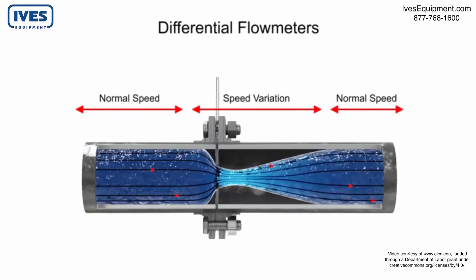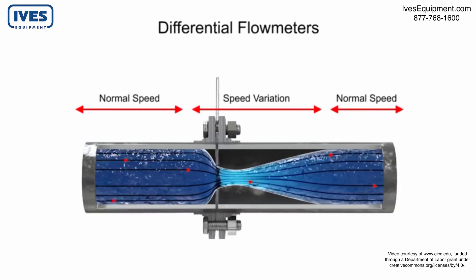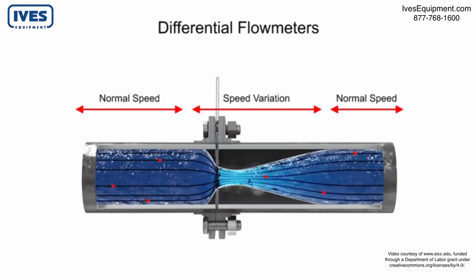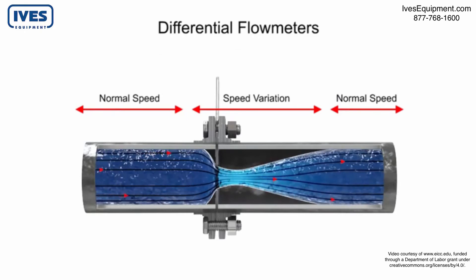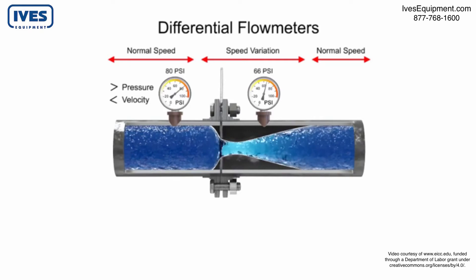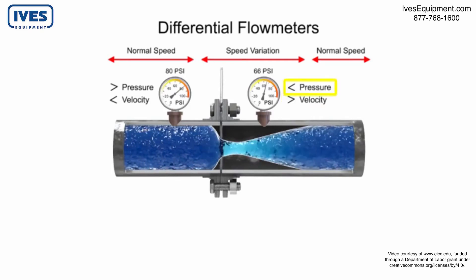According to the laws of conservation of energy, the fluid entering the pipe must equal the mass leaving the pipe during the same period of time. The velocity of the fluid leaving the orifice is greater than the velocity of the fluid entering the orifice. Applying Bernoulli's principle, the increased fluid velocity results in a decrease in pressure.